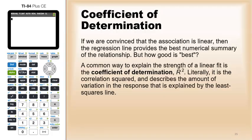So if we're convinced that association is linear, then the regression line provides the best numerical summary of the relationship. That is, if it looks like a line can go through it, the next thing to do is draw a line through it.